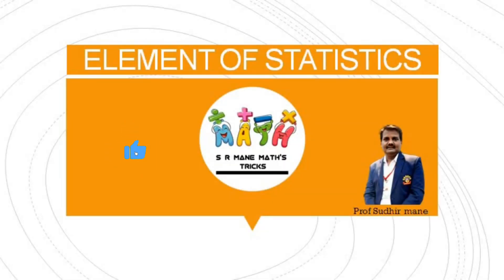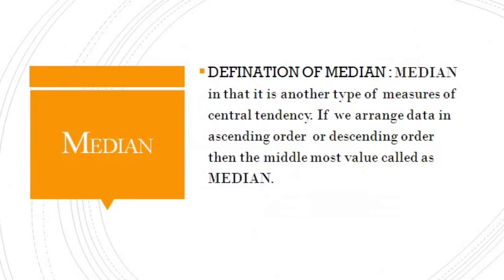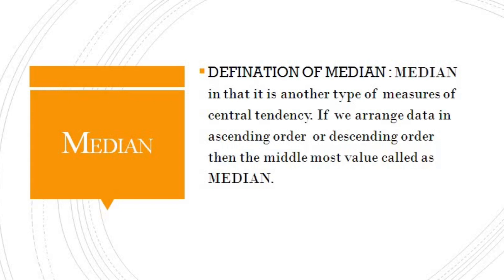We have to discuss the elements of statistics. The topic name is median — median for ungrouped data and distributed data. First of all, we have to discuss the definition of median. Median is another type of measure of central tendency.